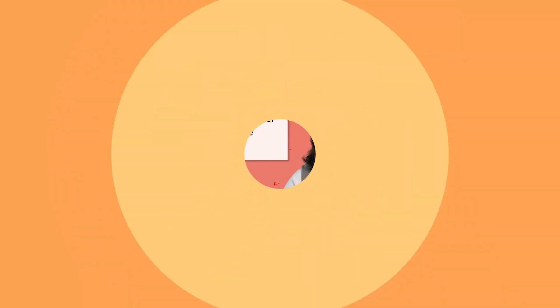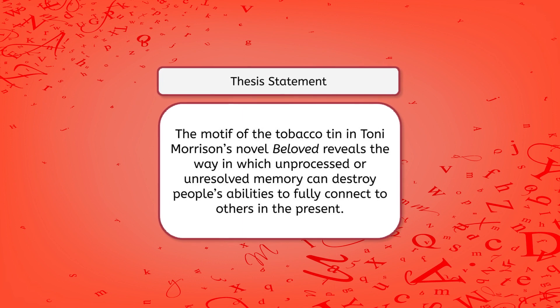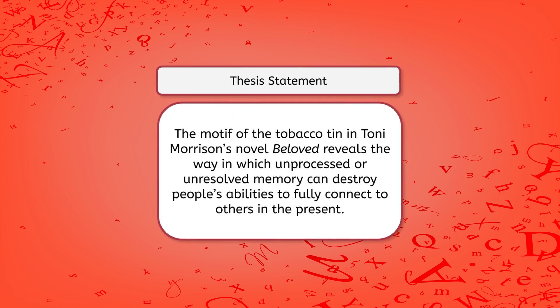Recently I wrote a paper about the use of motif in Toni Morrison's novel Beloved, which tells a story about formerly enslaved people who are grappling with their painful pasts as they try to make lives for themselves after emancipation. The thesis of my paper was: the motif of the tobacco tin in Toni Morrison's novel Beloved reveals the way in which unprocessed or unresolved memory can destroy people's abilities to fully connect to others in the present. I drew from scenes throughout the book to help me make this claim.